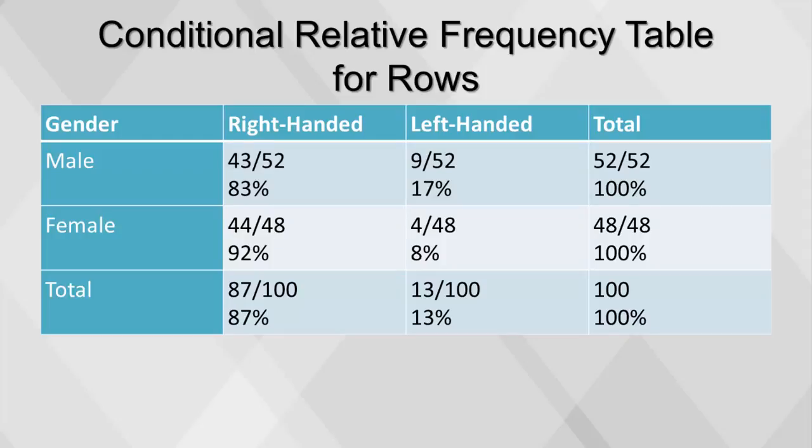The table can be easily read: 83% of males are right-handed, and only 8% of females are left-handed.